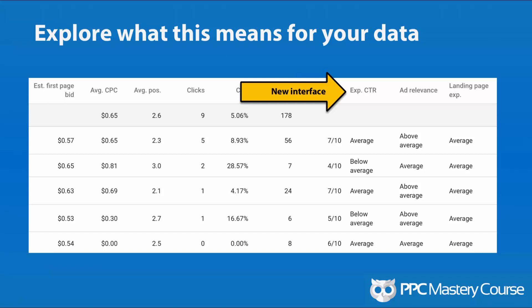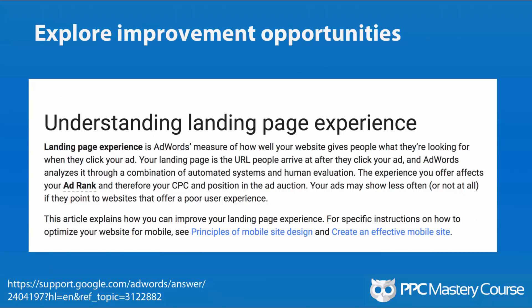At least now we know that since they're saying our expected CTR is below average, we know we can improve it. If they tell us to improve the landing page experience, they have a whole article about how you can do that. It's just that it's not consistent, and even if you fixed all these things there's no guarantee your quality score is going to display something better. Quality score is supposed to be telling you what you can improve so you can improve it — it should be a linear process.